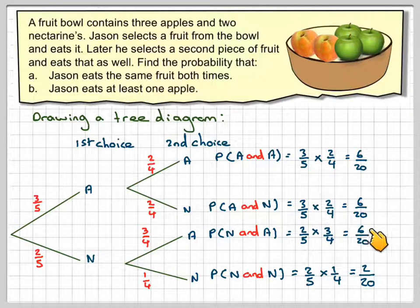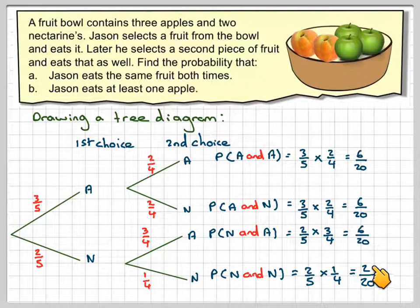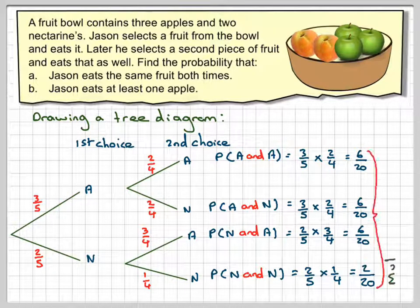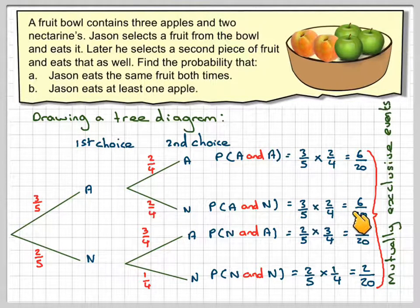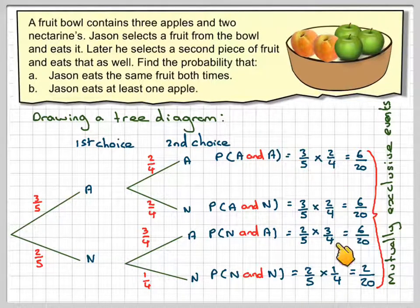Notice that six plus six plus six plus two makes twenty, so twenty out of twenty. These add up to one. These are called mutually exclusive events, i.e., if one of them happens the other three events will not happen and the probability sum will be equal to one.